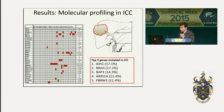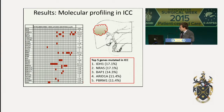This slide shows the detailed description of gene mutations in intrahepatic cholangiocarcinoma. Each column represents a patient, and genes tested are listed in rows. The red rectangle indicates a mutation in a given gene in a given patient. In the square, you can see the five genes most mutated in intrahepatic cholangiocarcinoma.